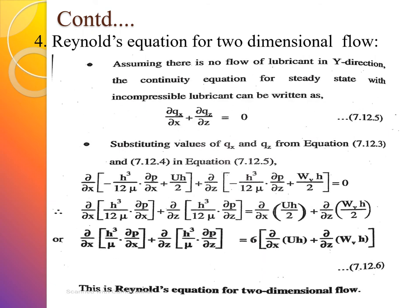For the Reynolds equation for two-dimensional flow, assuming no flow in the y-direction, the continuity equation for steady-state incompressible lubricant is ∂qx/∂x + ∂qz/∂z = 0. Substituting the values of qx and qz and rearranging, we get the Reynolds equation: ∂/∂x(h³/μ·∂p/∂x) + ∂/∂z(h³/μ·∂p/∂z) = 6·[∂(Uh)/∂x + ∂(Wh)/∂z].